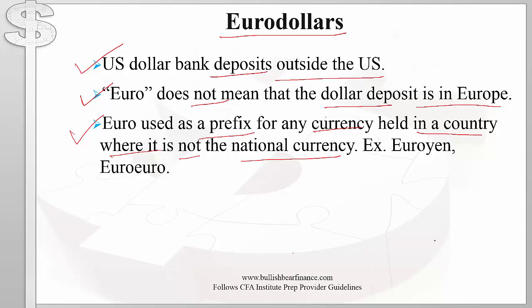For example, if you have Japanese yen being held in South Africa, that would be called euro yen. You can also have 'euro euro,' which simply refers to euro deposits being held outside Europe — for example, a euro deposit in Canada would be euro euro. Now, how is the term eurodollar related to LIBOR?